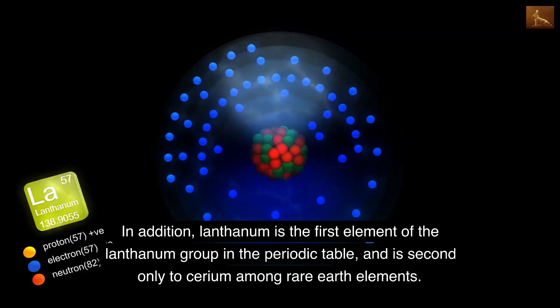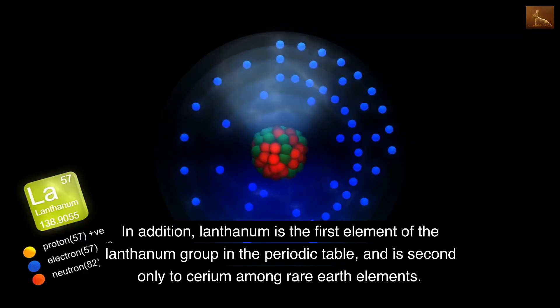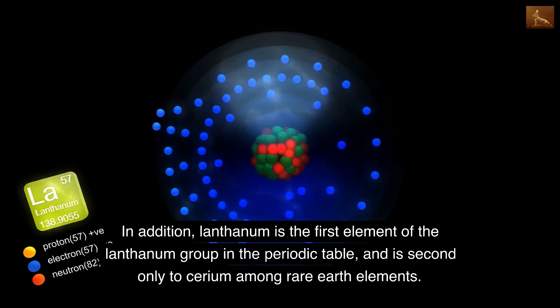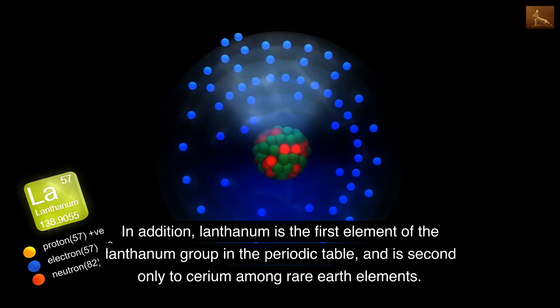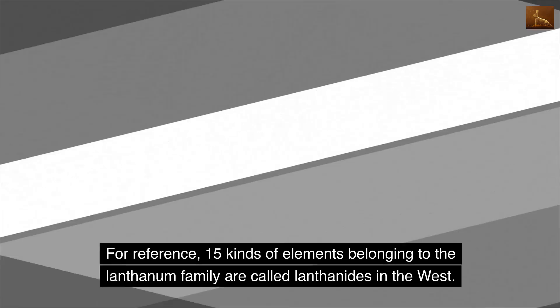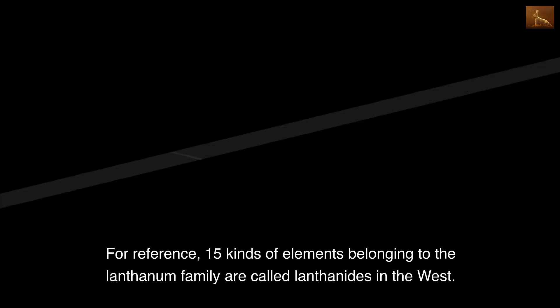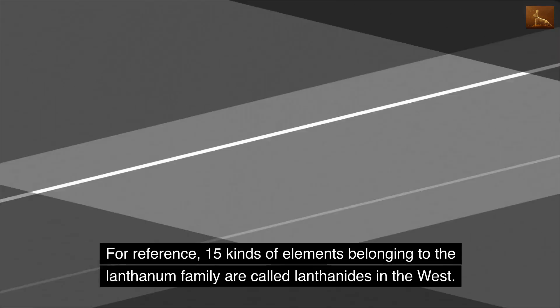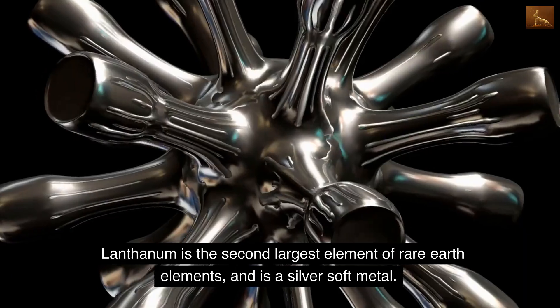Lanthanum is the first element of the lanthanum group in the periodic table, and is second only to cerium among rare earth elements. For reference, the 15 kinds of elements belonging to the lanthanum family are called lanthanides in the West.